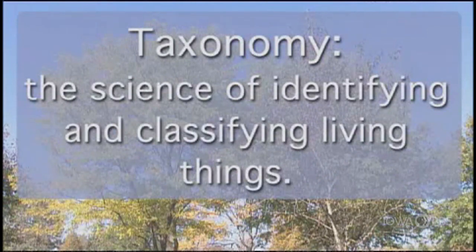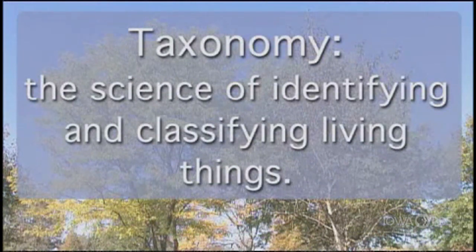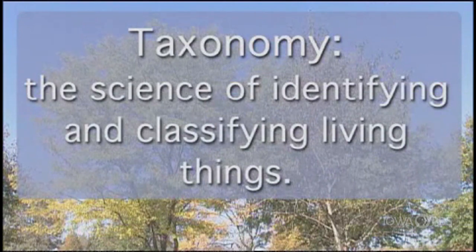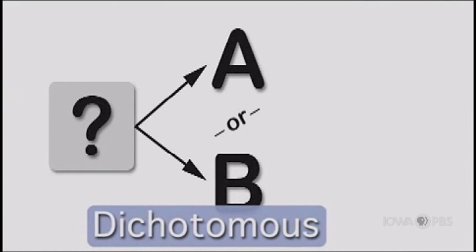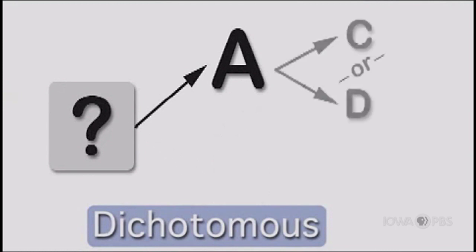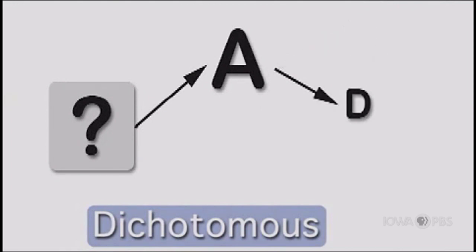As a naturalist, I'm constantly asked to identify things. The science of identifying and classifying living things is called taxonomy. Scientists develop dichotomous keys to help them identify plants and animals. Dichotomous means divided into two parts. So when using a dichotomous key, you always have two choices to lead you to the correct name of the plant or animal. You too can use a dichotomous key to help you identify something.